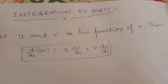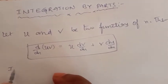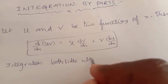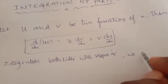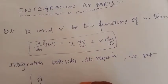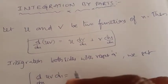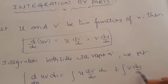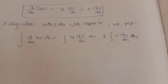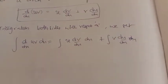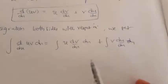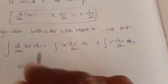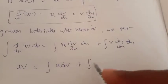Can we make it an integration formula? Integrating both sides with respect to x, we get integral of d by dx of uv into dx equals integral u into dv by dx into dx plus integral v into du by dx. Since integration is the reverse process of differentiation, integration and differentiation cancel. Here we have uv equals, and dx dx cancels, remaining u dv plus v du.